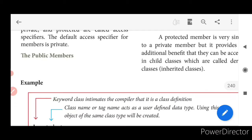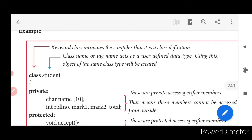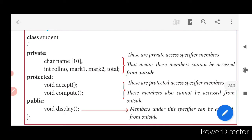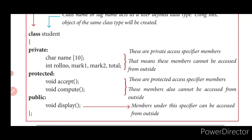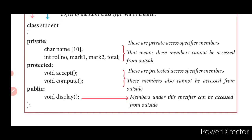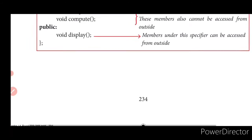Let us see this with an example. A class named 'student' — 'class' is the keyword, 'student' is the class name. The members name, role number, mark one, mark two, and total are declared as private, so they cannot be accessed outside the class. In protected, derived classes can use 'accept' and 'compute'. In public, 'display' is declared — it can be accessed from anywhere inside the program.